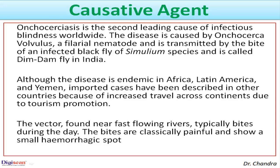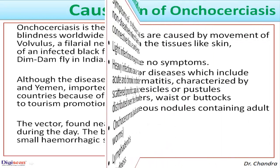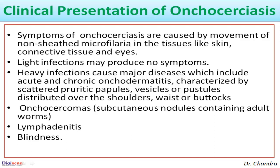The bites are classically painful and show a small hemorrhagic spot. Symptoms of onchocerciasis are caused by movement of non-sheathed microfilariae in tissues such as skin, connective tissue, and eyes. Light infections may produce no symptoms. However, heavy infections cause major diseases including acute and chronic onchodermatitis, characterized by scattered pruritic papules, vesicles, or pustules distributed over the shoulders, waist, and buttocks, as well as onchocercomas, lymphadenitis, and blindness.